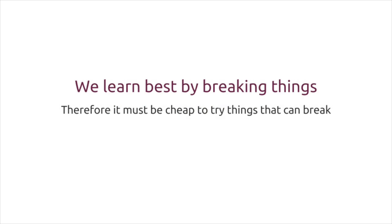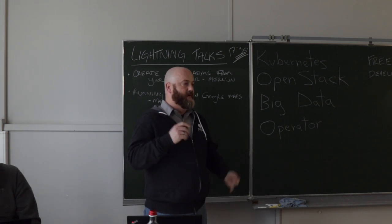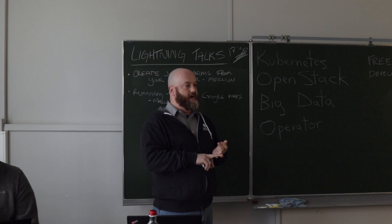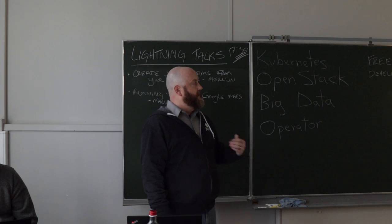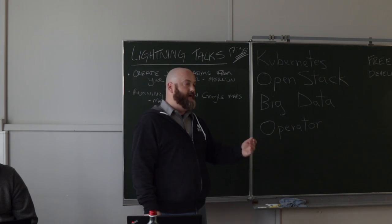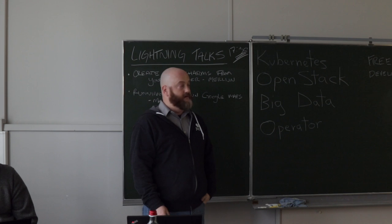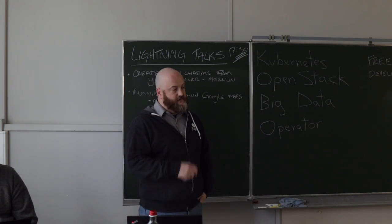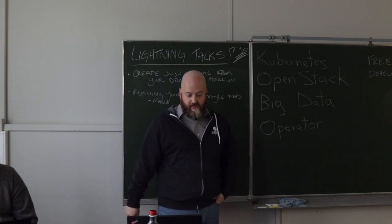I learn best by breaking things, so it must be cheap so that we can break things and iterate. Through Juju, we've made deployments of Kubernetes repeatable and dependable. I can deploy on Windows Azure, and I can deploy the same model on my laptop or on GCE. It takes only a couple of minutes, and then I can test my new operations code. If it broke, I destroy it and deploy a new one within literally minutes. The sooner you can automate your deployments, the faster you can get to iterating. That's one of the big benefits we got with Juju.